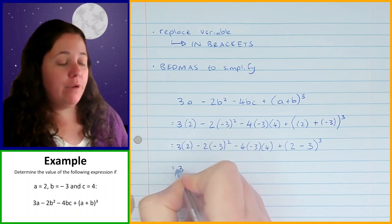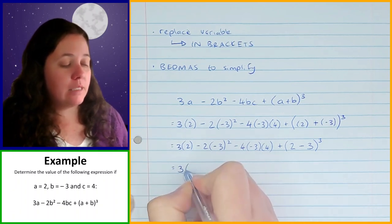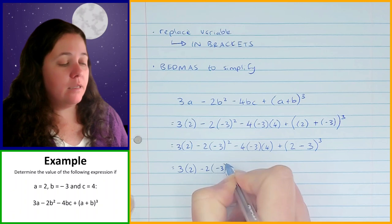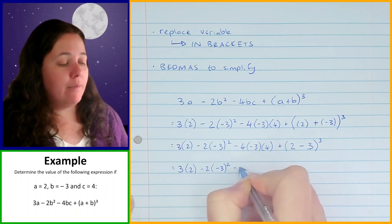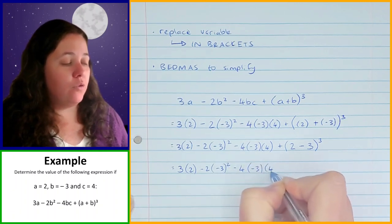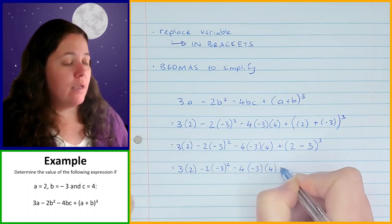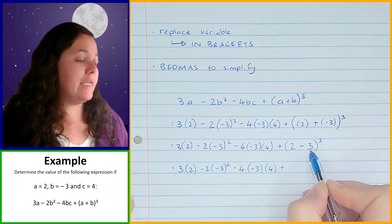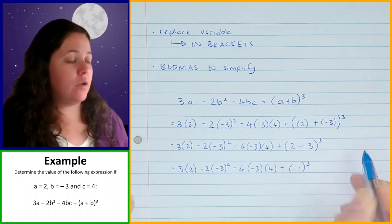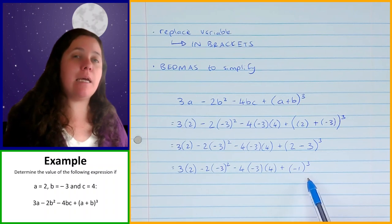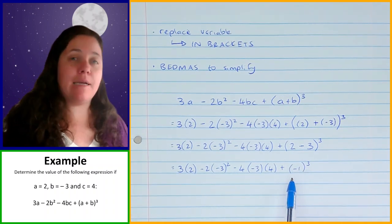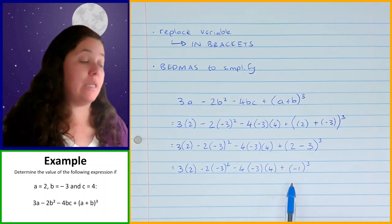Now I can simplify what's inside those brackets. I've got 3 times 2, minus 2 times negative 3 squared, minus 4 times negative 3 times 4, plus, and then 2 minus 3 is negative 1, cubed. That's the B part of BEDMAS — simplifying what's inside the brackets — done.